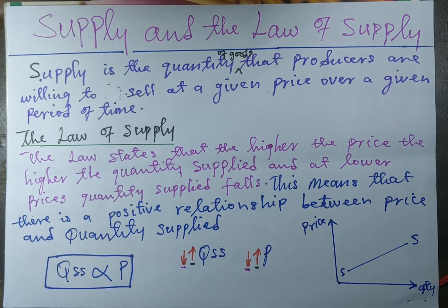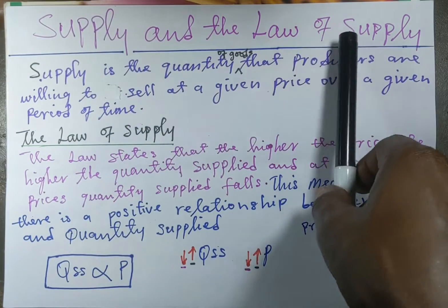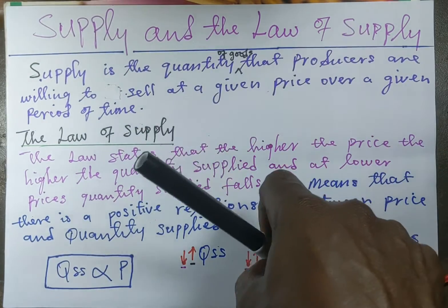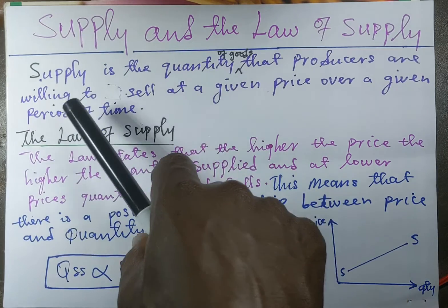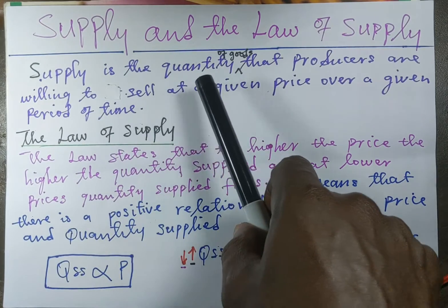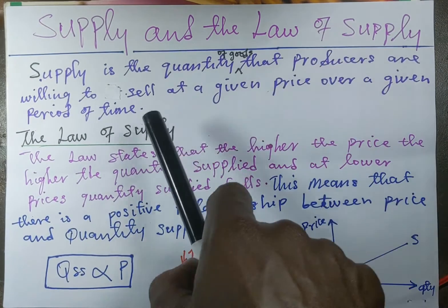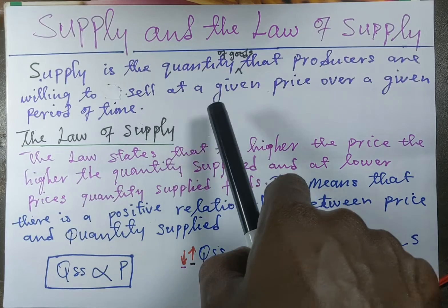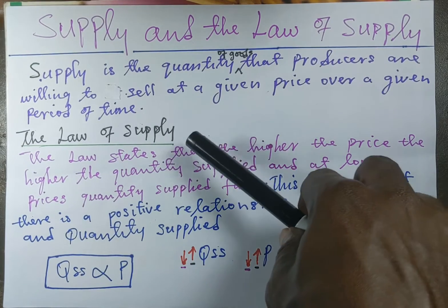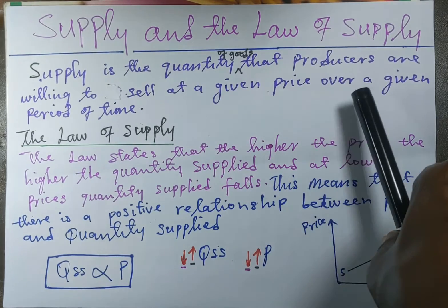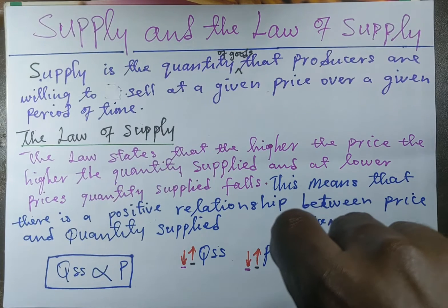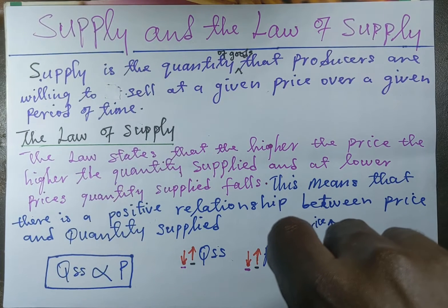Welcome to another session of Sam's economics tutorials. In today's tutorial we are going to be looking at supply and the law of supply. By definition, supply is the quantity of goods that producers are willing to sell in the market at a given price over a given period of time.